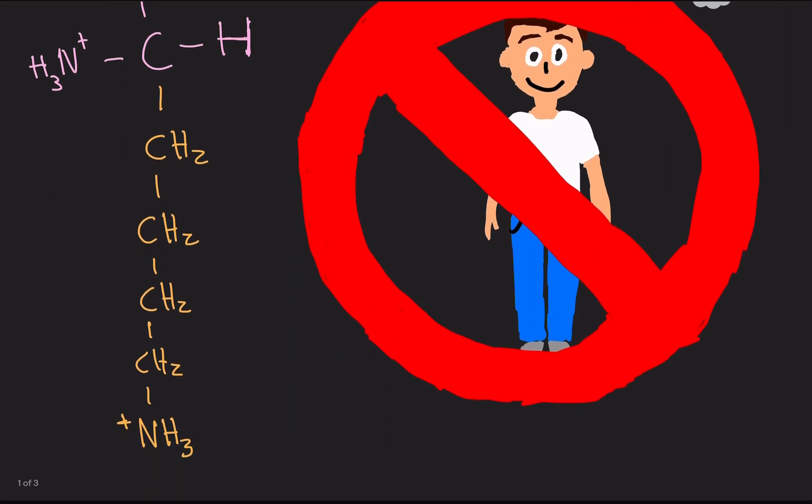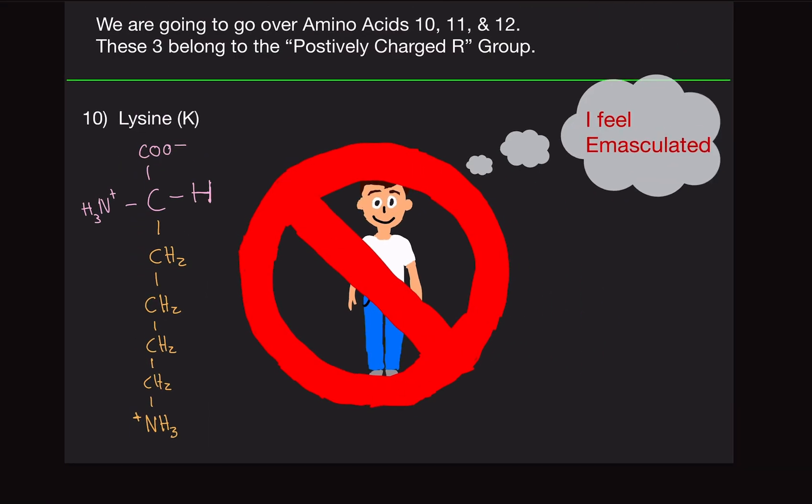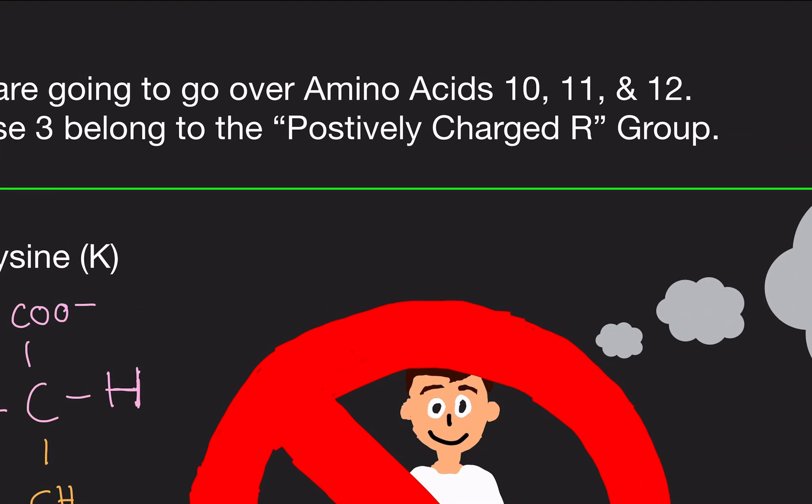For the R group, it's literally a long chain of CH2s with an NH3 at the end. So it's CH2, that's one, CH2 that's two, CH2 that's three, CH2 that's four. Four CH2s ended by NH3, and notice the positive charge. That's why it says the positively charged R group.